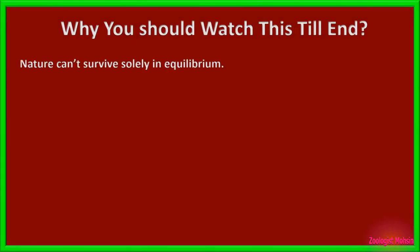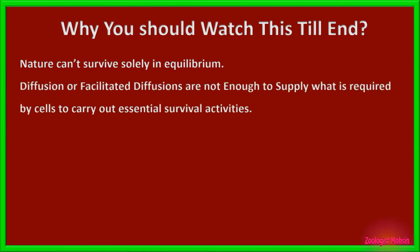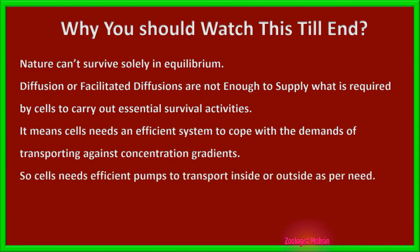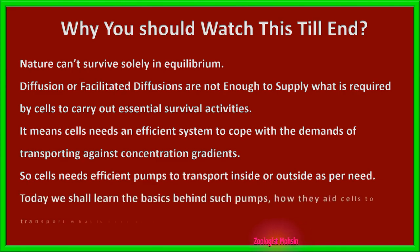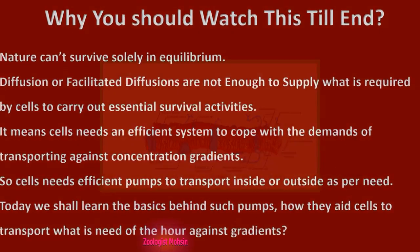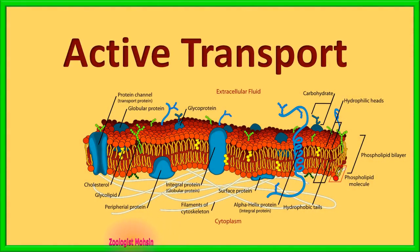Nature cannot survive solely in equilibrium. Diffusion or facilitated diffusions are not enough to supply what is required by cells to carry out essential survival activities. It means cells need an efficient system to cope with the demands of transporting against concentration gradients. So cells need efficient pumps to transport inside or outside as per need. Today we shall learn the basics behind such pumps — how they aid cells to transport what is needed against gradients. This is active transport.